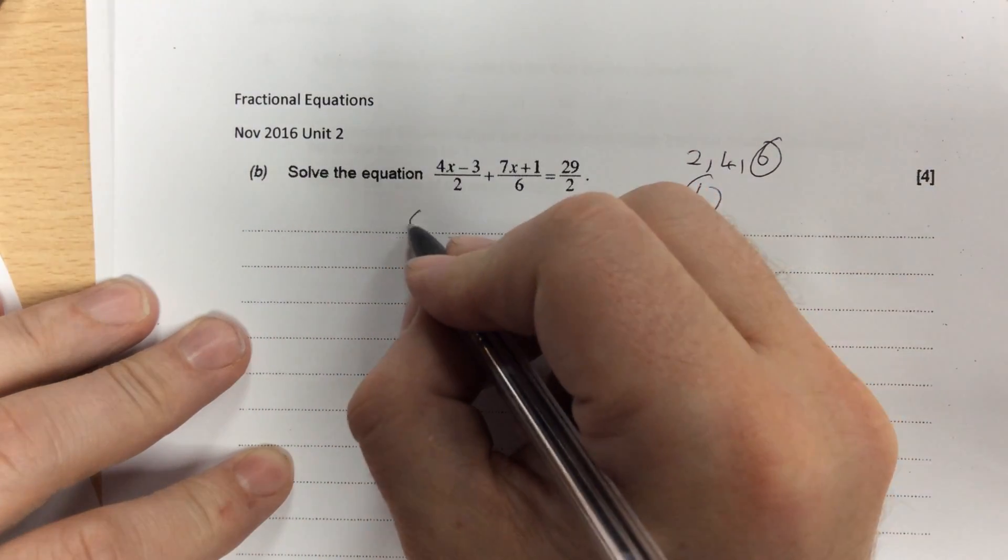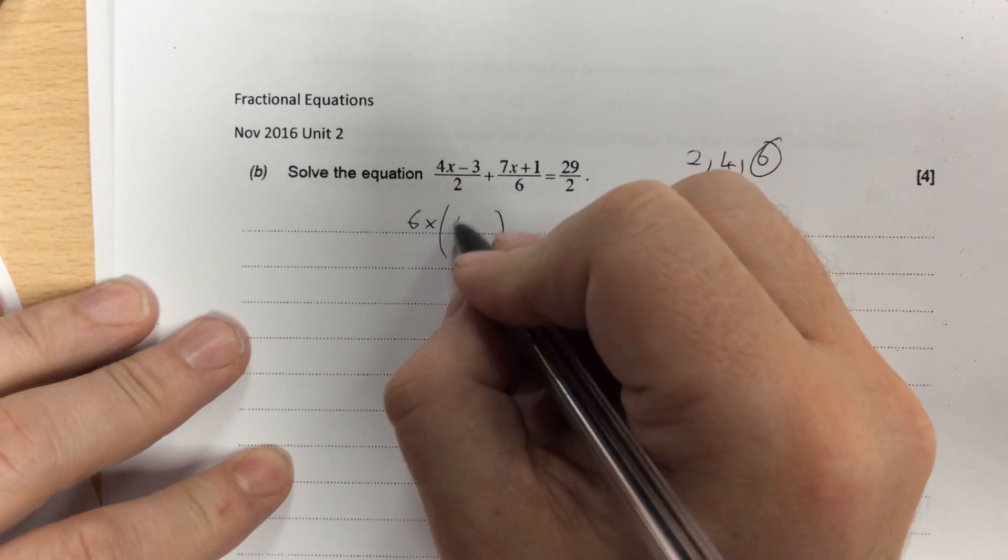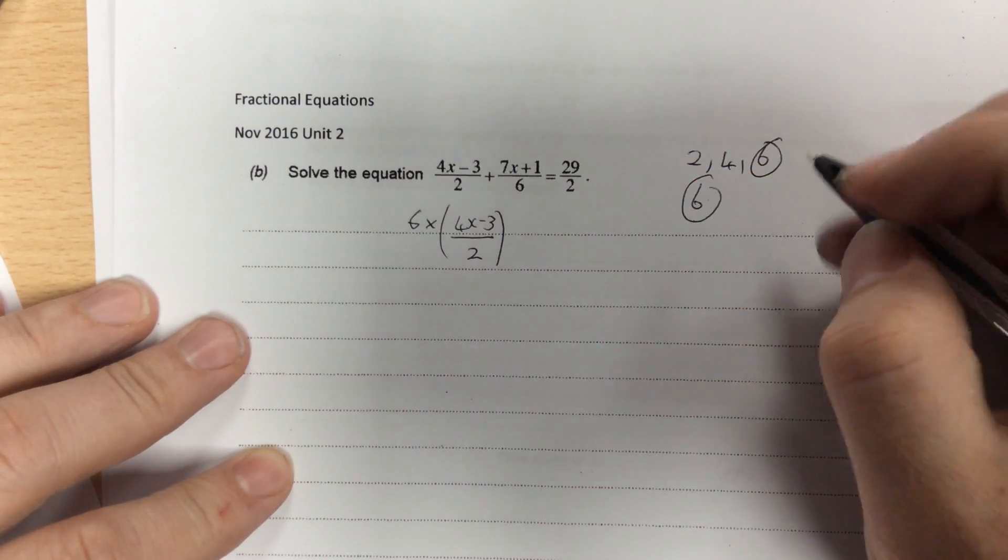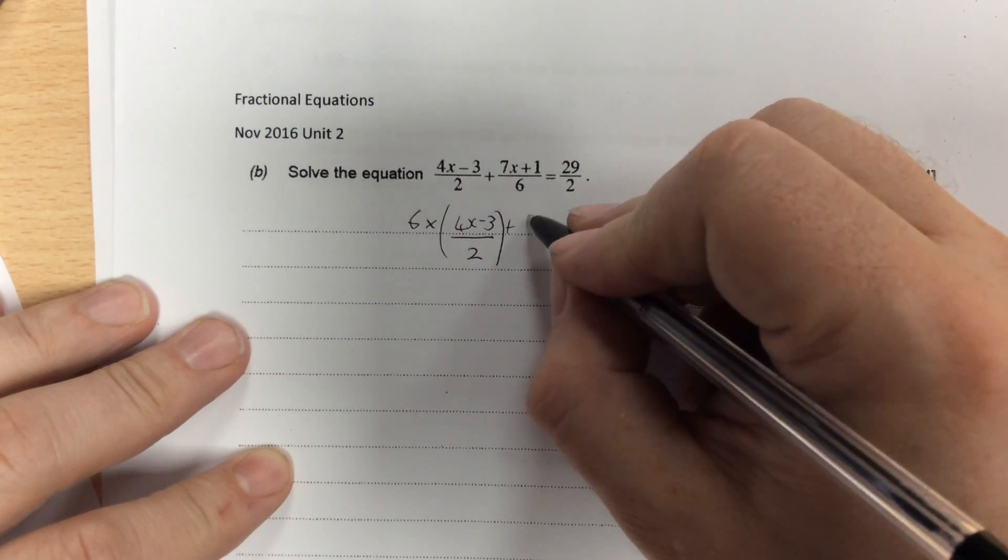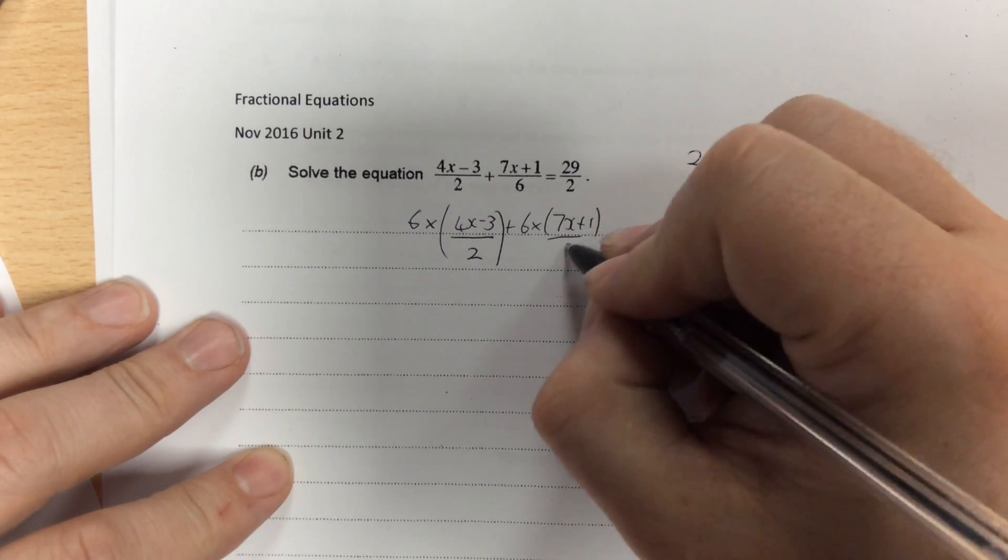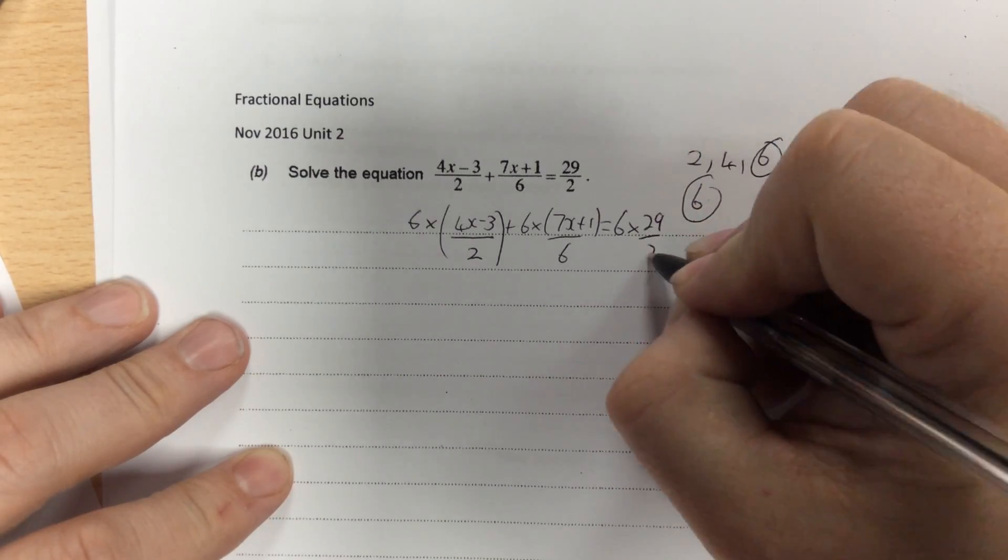So what I need to do now is multiply everything by 6. I'm going to put a bracket around these because there's more than one term there. So 6 times 4x minus 3 over 2 plus 6 times 7x plus 1 all over 6 equals 6 times 29 over 2.